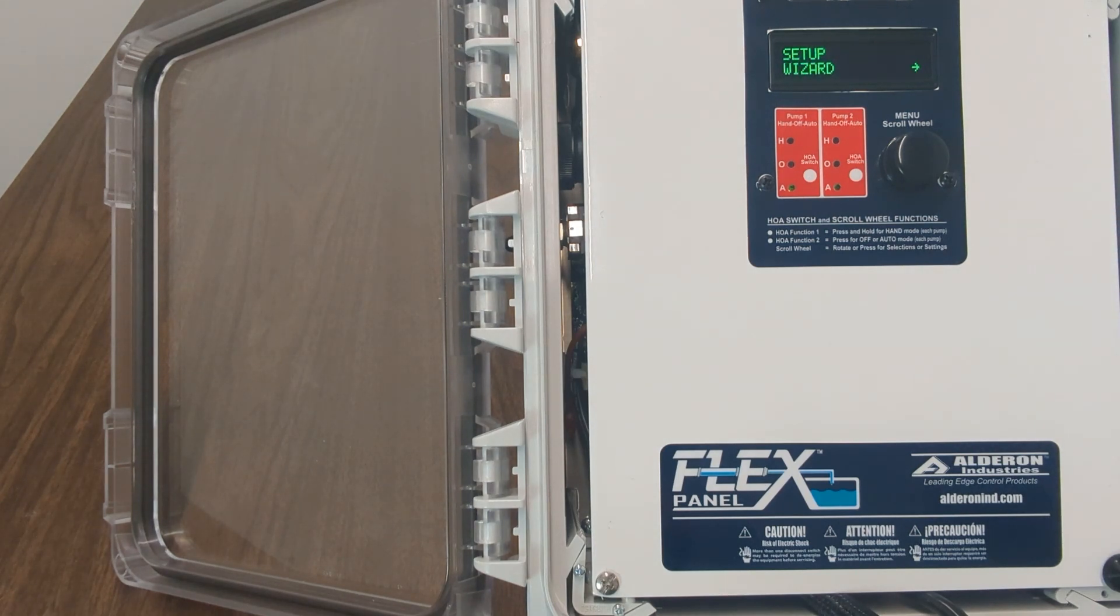Finally, the system will display setup finished and inputs configured. The setup wizard is now complete. To get back to the home screen, simply press the exterior test silence switch.